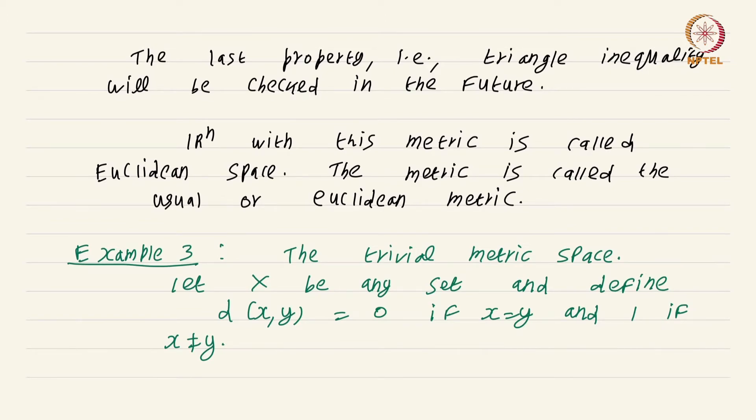This metric is known as the discrete metric, and this metric space X with this discrete metric is often called the trivial or discrete metric space. This is a very very trivial scenario, but it is very useful if you want to get a quick counterexample to some naive conjecture that you make.